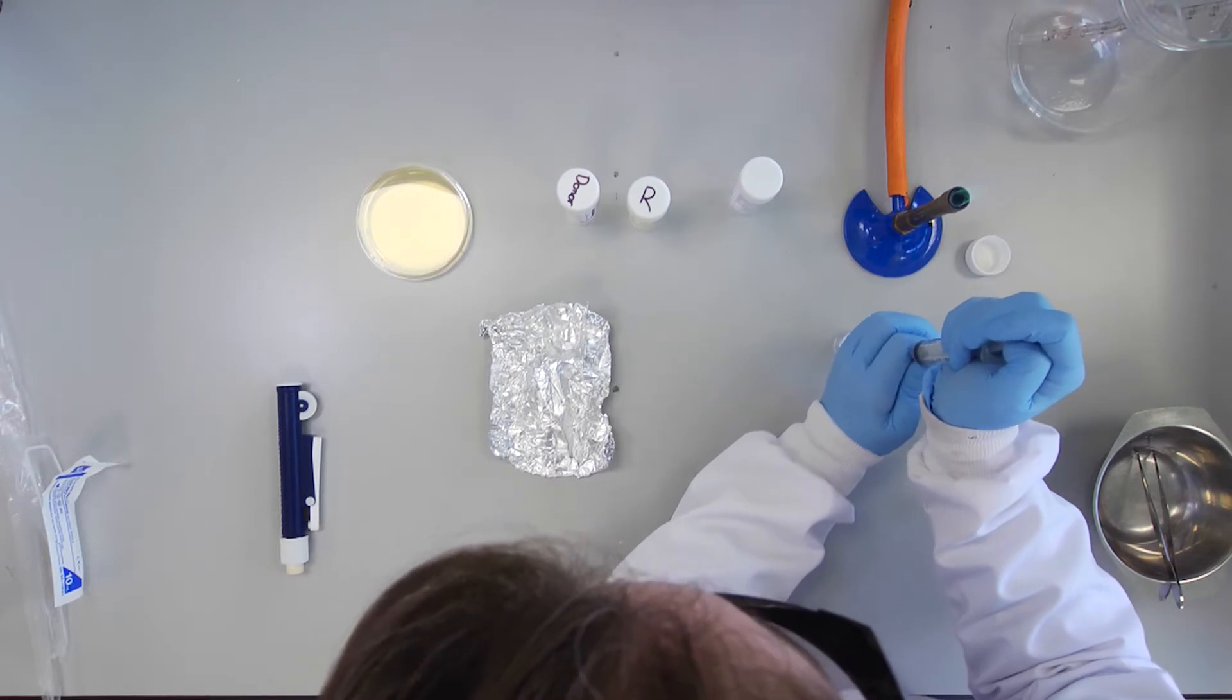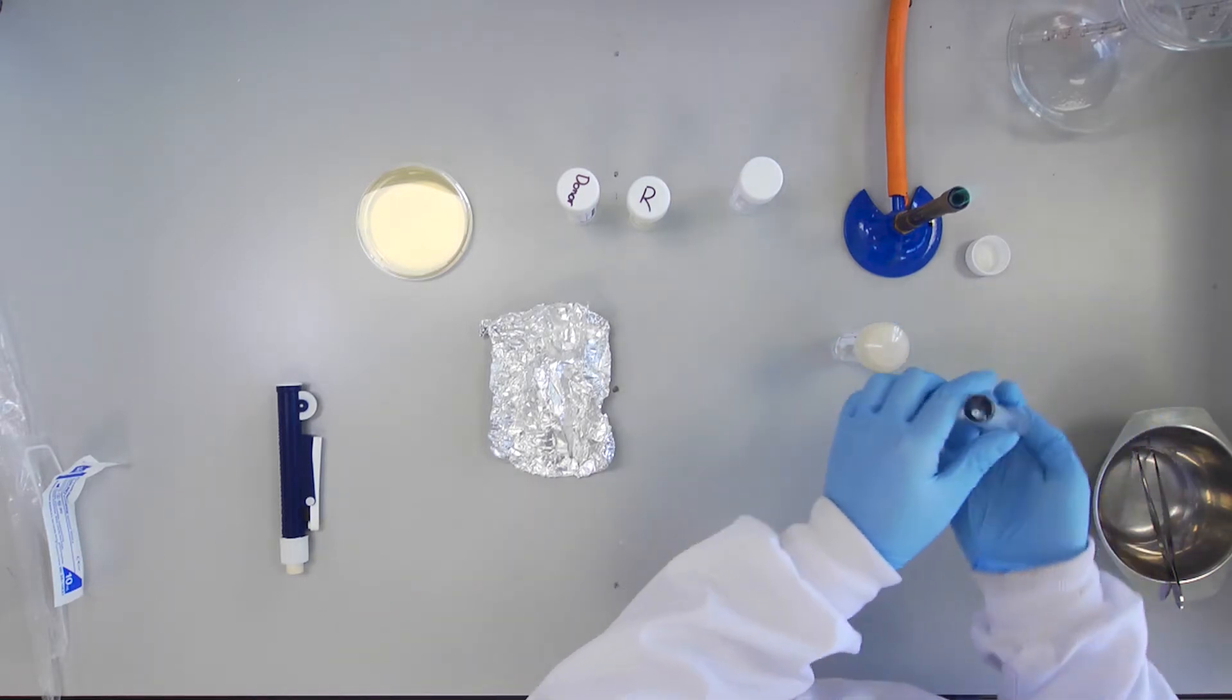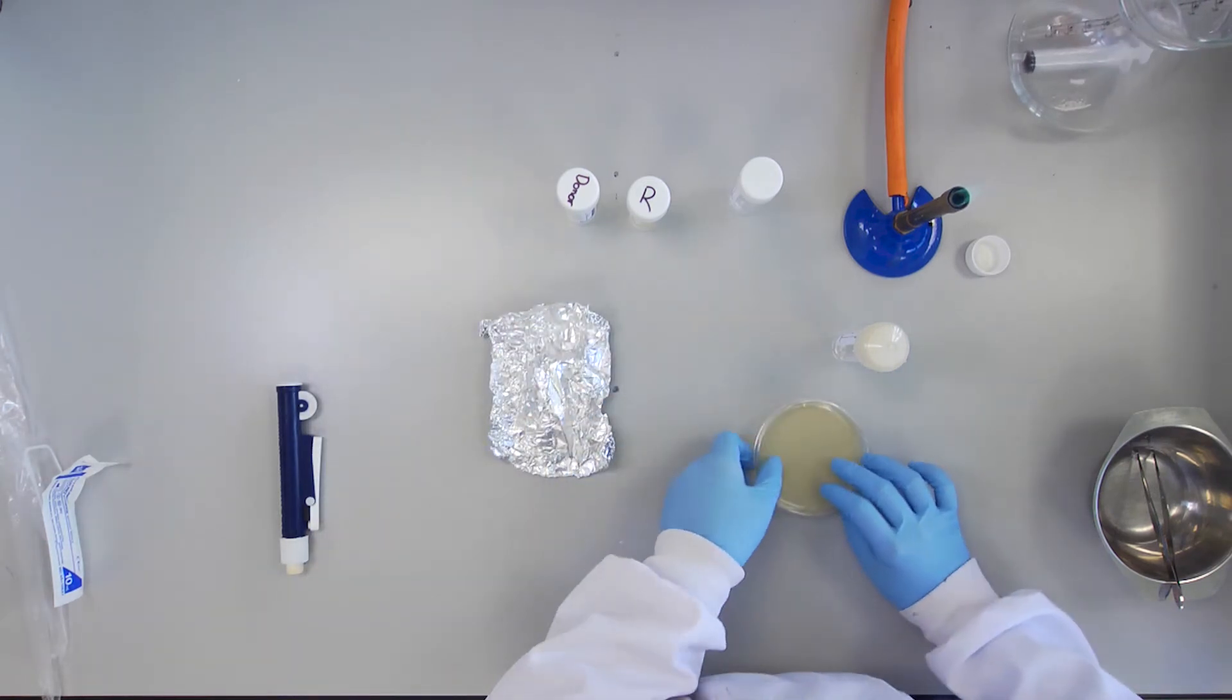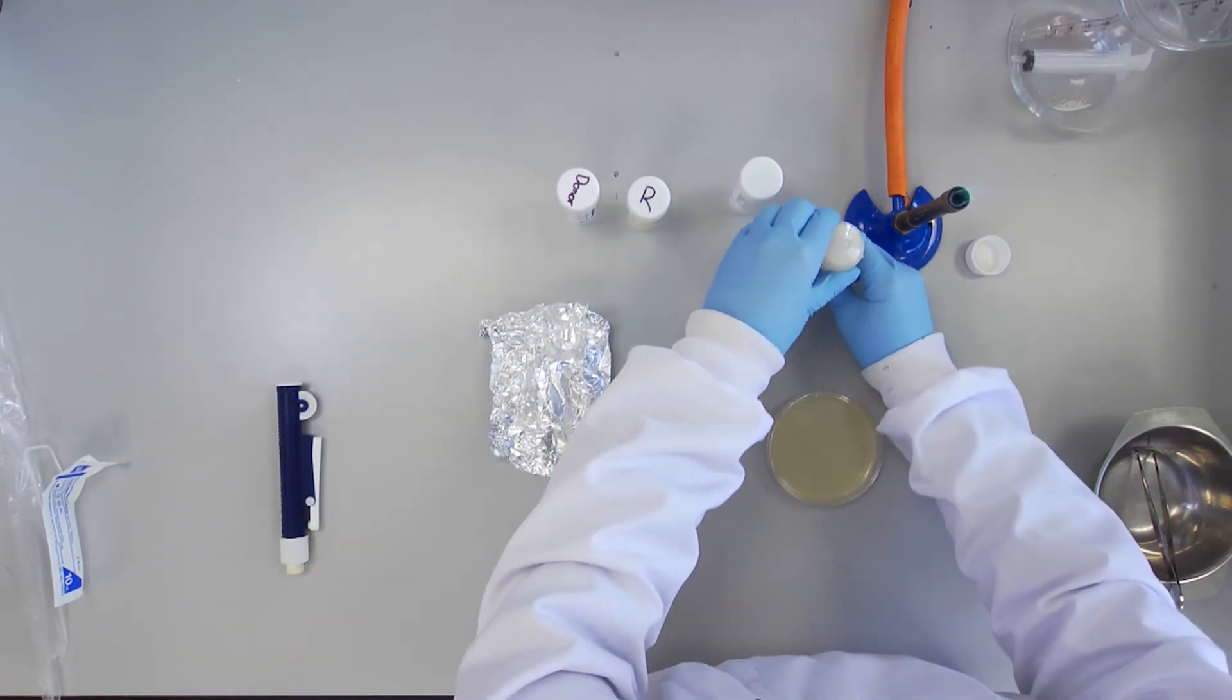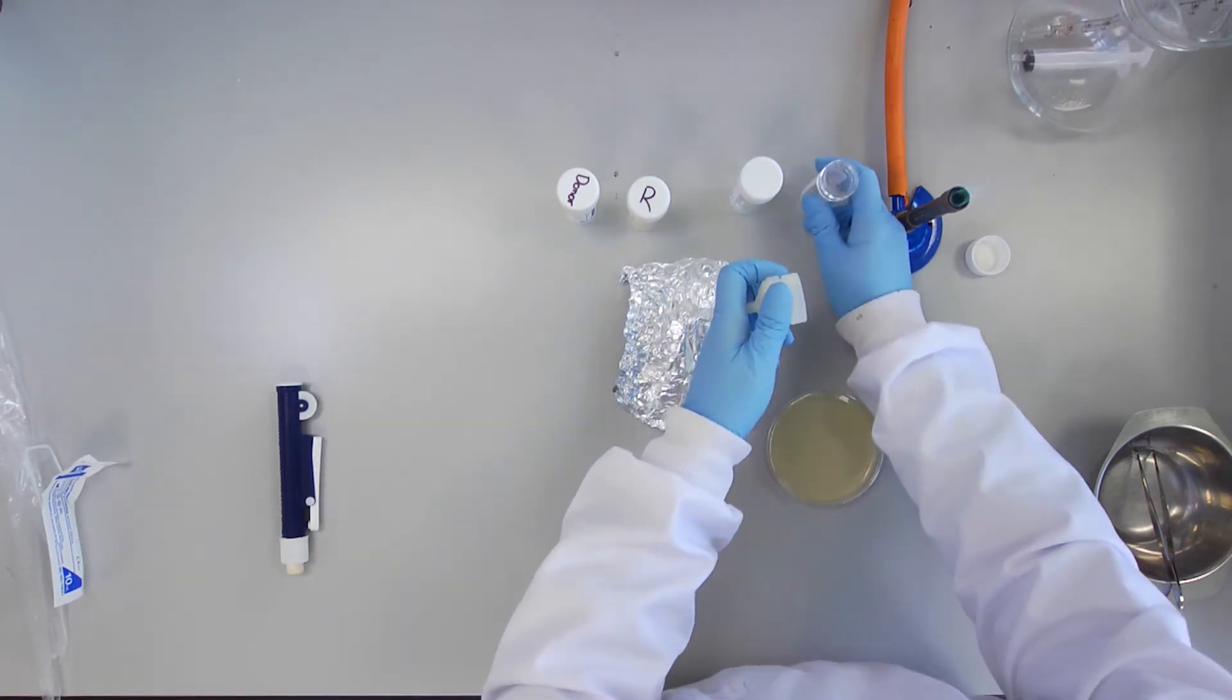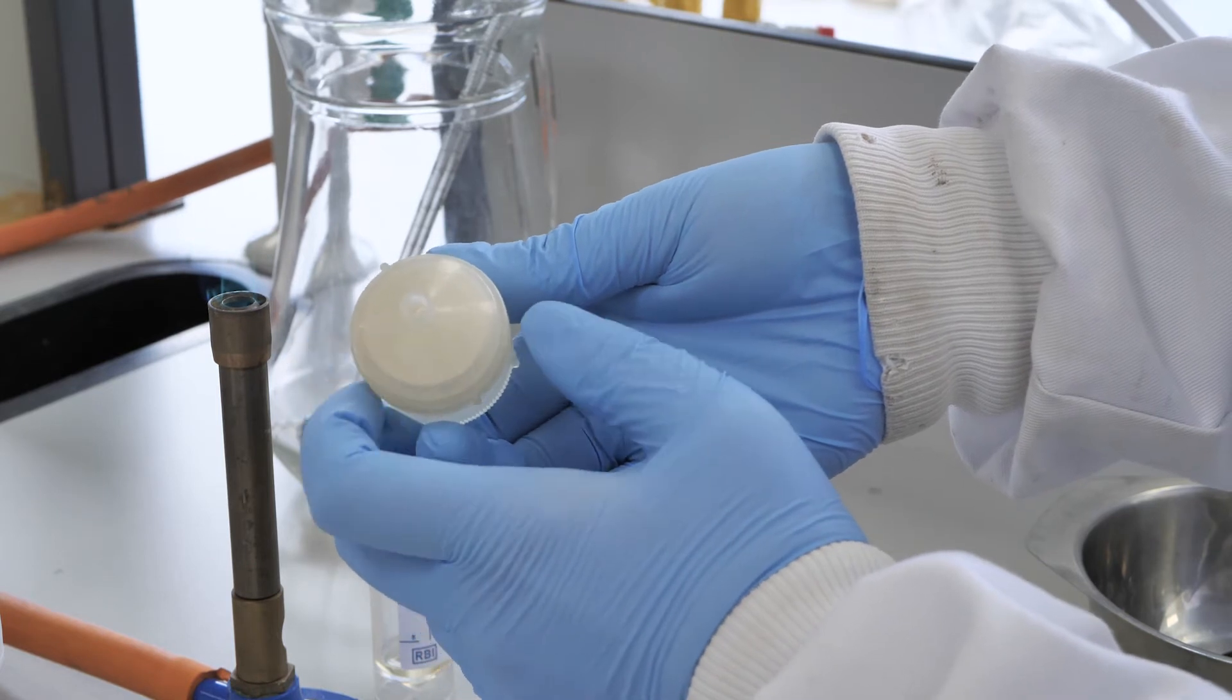Do not allow the plunger to snap backwards as this may rupture the membrane filter. Remove the Swinex from the top of the universal. Open the Swinex filter.